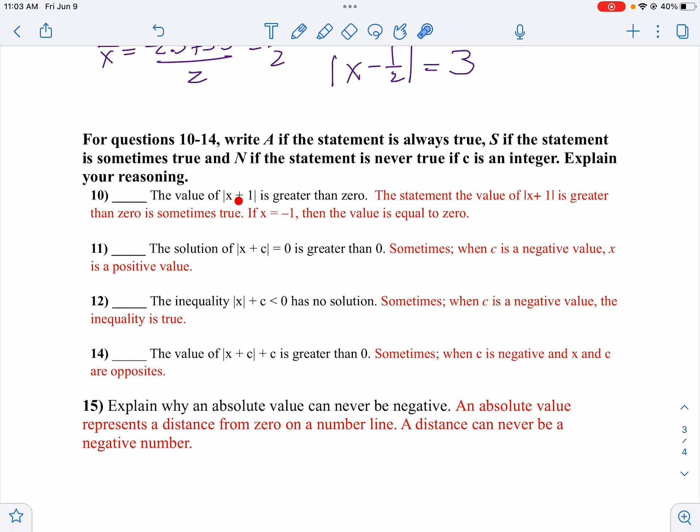The absolute value of x plus one is greater than zero. Well, that would seem to be true, except when x is negative one. Negative one plus one would be zero. So that answer is sometimes.